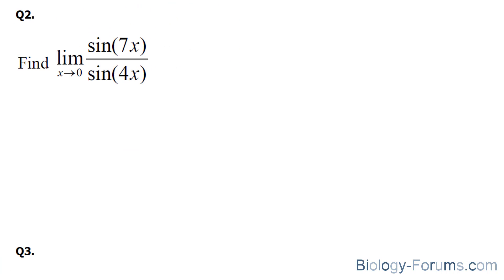In this question, we have a sine at the top and a sine at the bottom, so we'll use the same logic as before. We'll multiply the top and the bottom by 7x this time and also 4x over 4x.